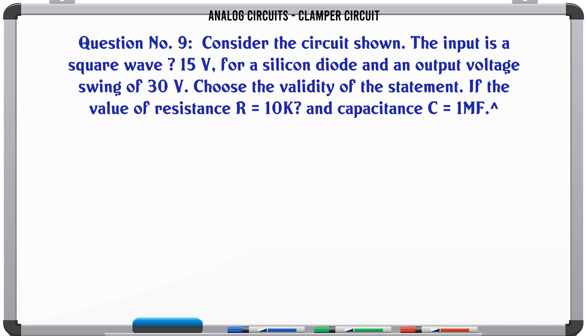Consider the circuit shown. The input is a square wave 15V. For a silicon diode and an output voltage swing of 30V, choose the validity of the statement: if the value of resistance R is 10K and capacitance C is 1 microfarad. A: True, B: False. The correct answer is true.